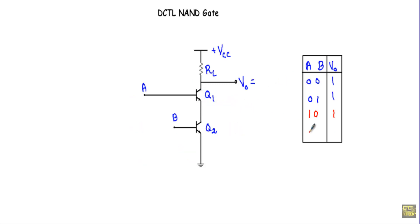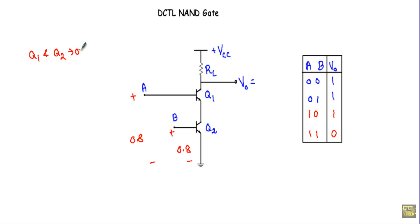Now consider the last case: input 1,1. The output will be at logic 0 because this is a NAND gate — if both inputs are at logic 1, the output is logic 0. I apply 0.8 volt at both base terminals, which is greater than 0.7 volt. Both transistors Q1 and Q2 will be in ON state, so their collector and emitter terminals act like closed switches. This creates a total short circuit from the output point to ground terminal, and across a short circuit we get a voltage drop of 0 volt. So our output will be at logic 0 for input 1,1.